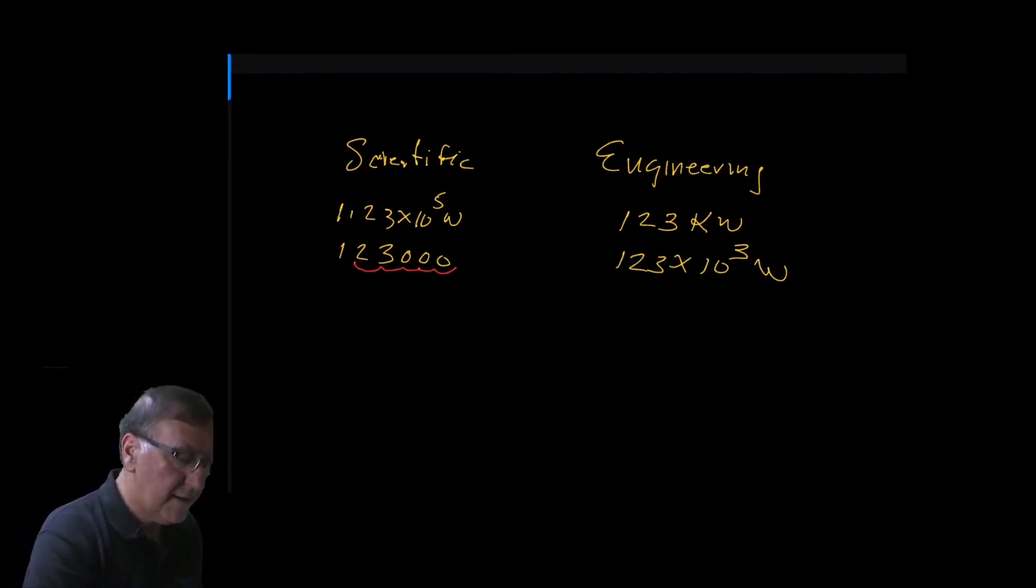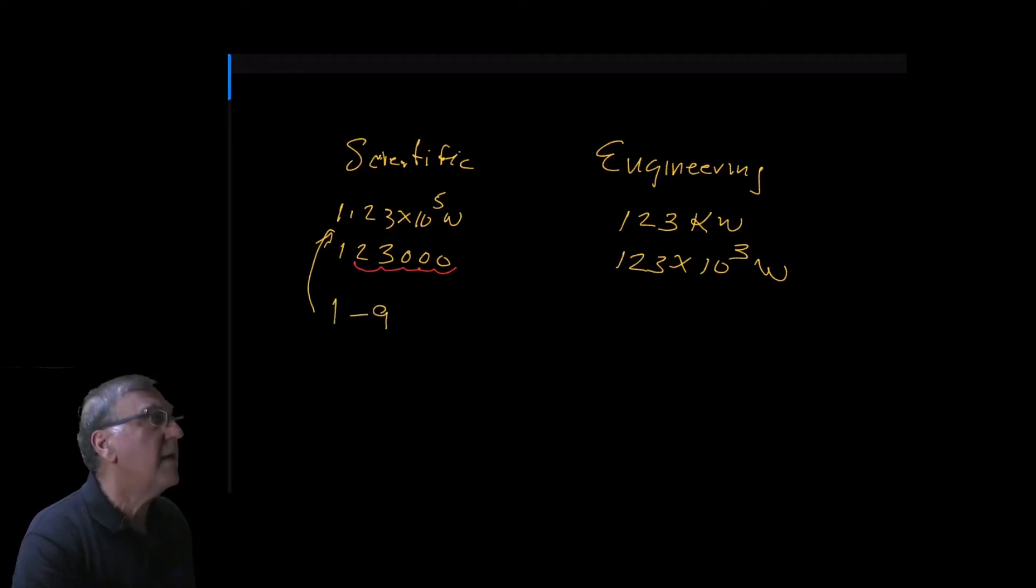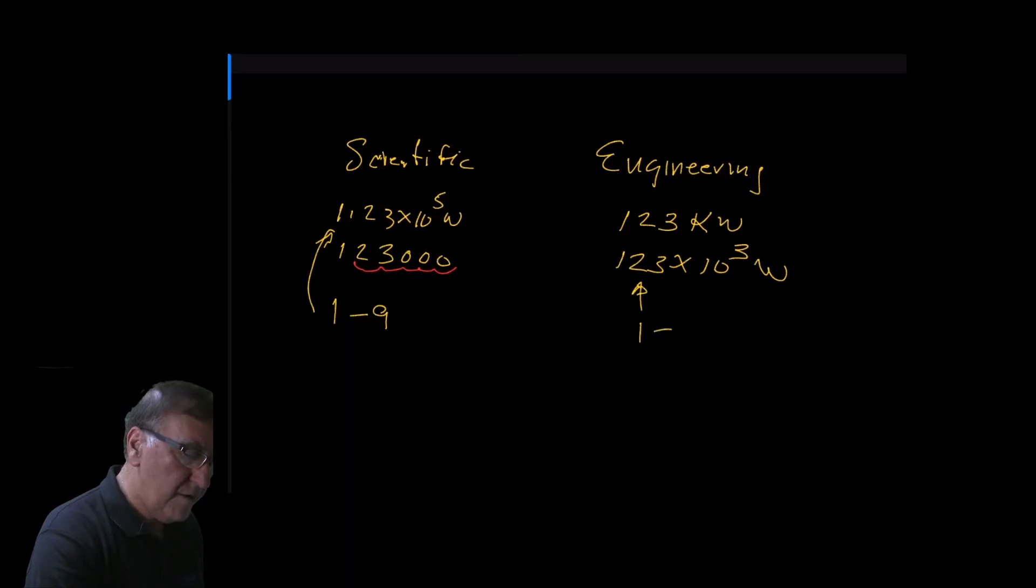Remember that in scientific notation, you have one place in front of the decimal, which can be a number from 1 to 9. And in engineering notation, you have a number that would be 1, 2, 9, 9, 9.